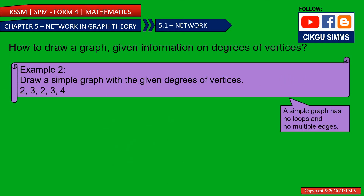Let's see example 2: draw a simple graph with the given degree of vertices. The degrees are 2, 3, 2, 3, 4. This means we have five vertices. So we can draw five vertices first — arranged like a pentagon. Let's see if it works.